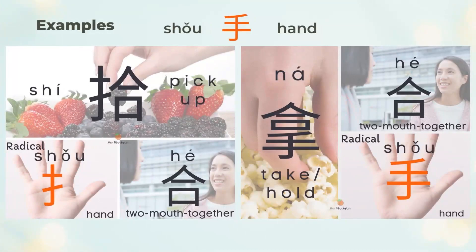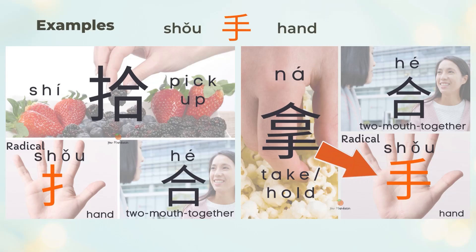拾 means to pick up. 拾 is the left 手 (hand) and the right 合 (together). 拿 means to take or to hold. 拿 is the same 合 (together) on the top and the bottom 手 (hand). Both 拾 and 拿 relate to two hands coming together to pick up or take.